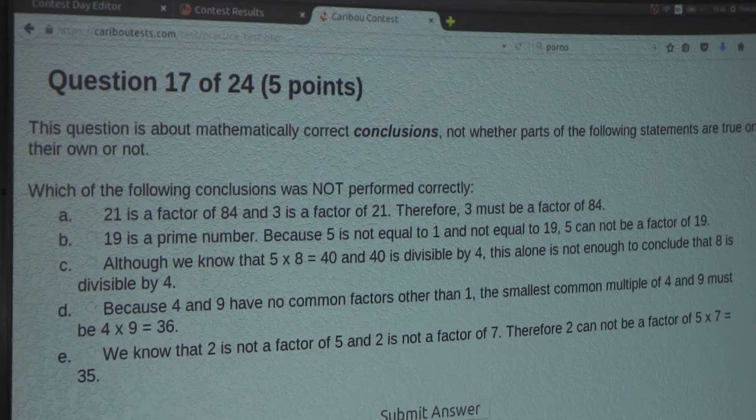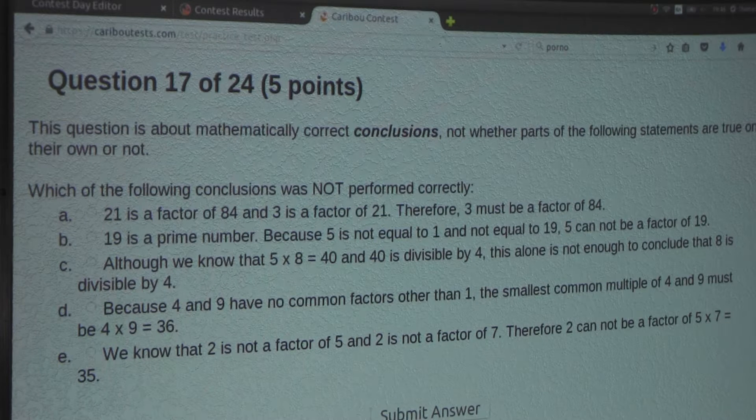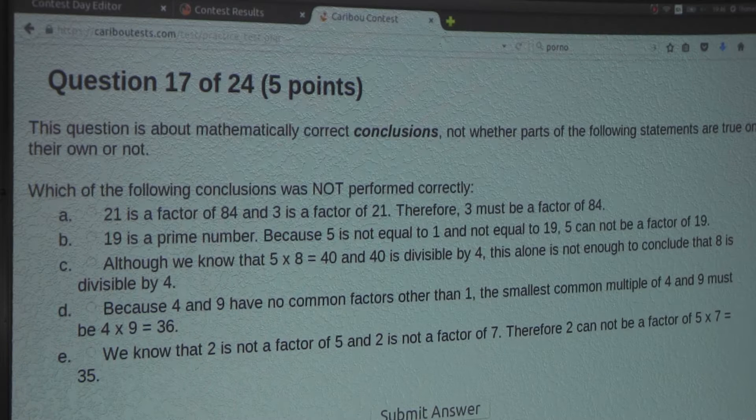Option A: 21 is a factor of 84, and 3 is a factor of 21, therefore, 3 must be a factor of 84.